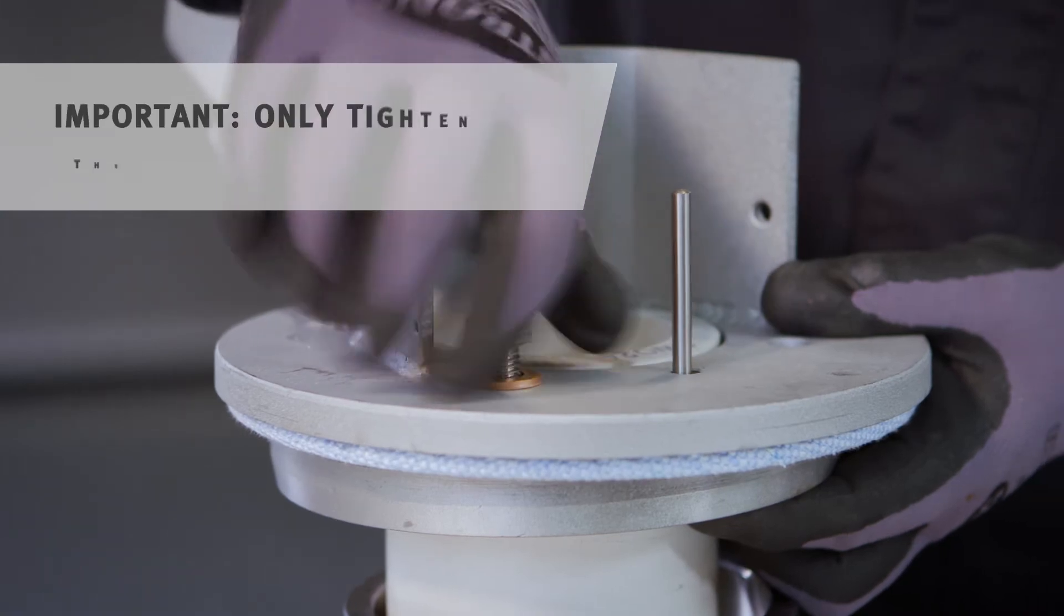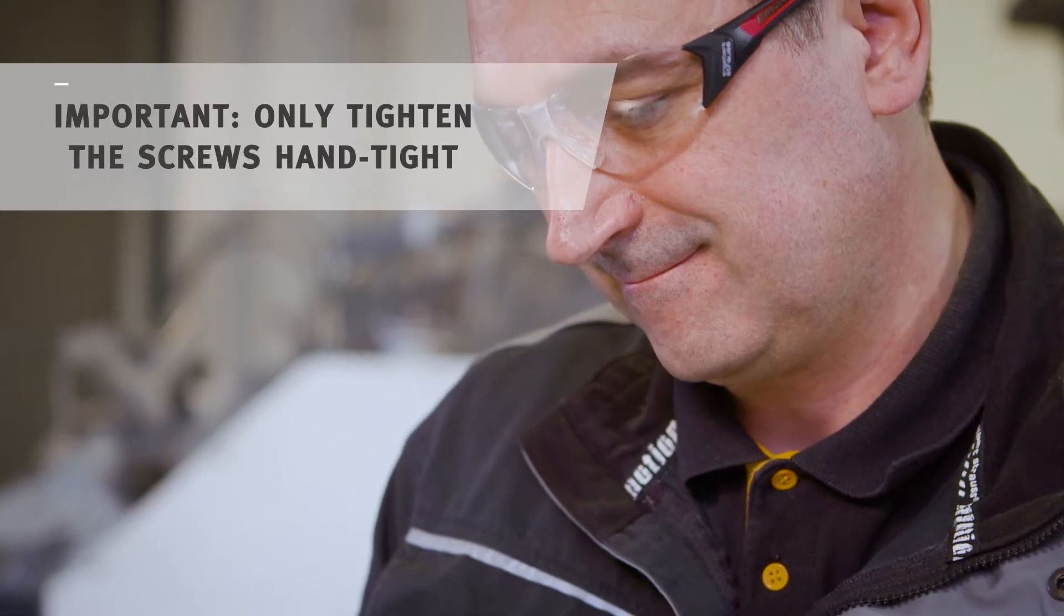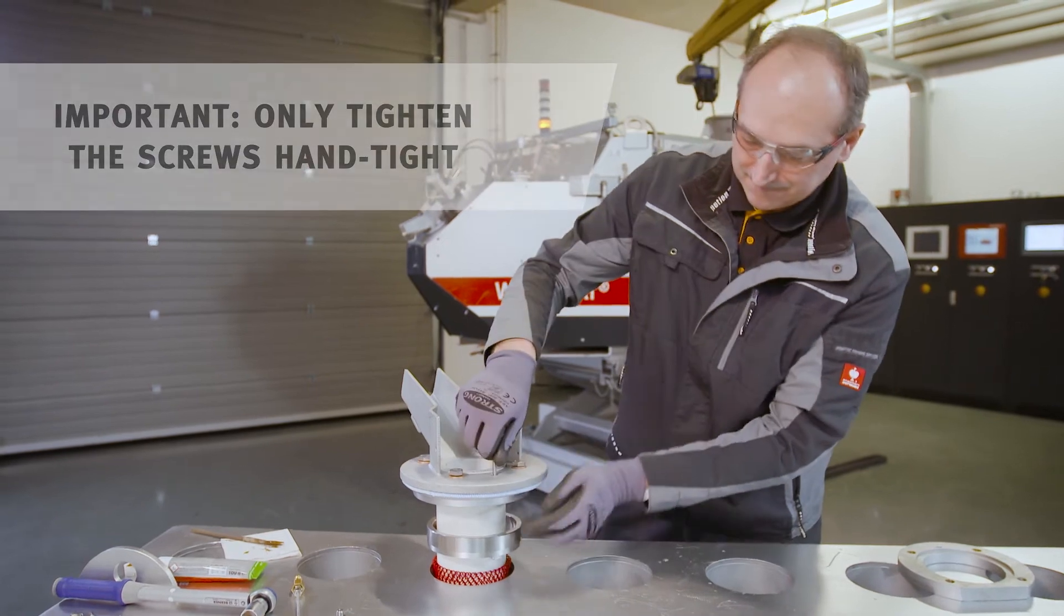Subsequently, you screw in the screws and tighten them with a wrench, thereby establishing a screw connection between the steel flanges.